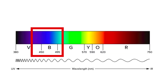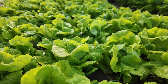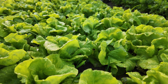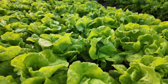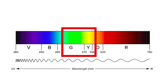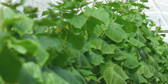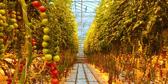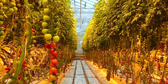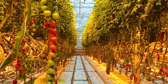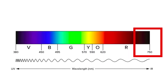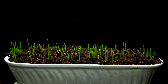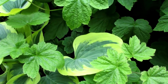Blue light, which is about 400 to 500 nanometers, is essential for vegetative growth, encouraging bushy and compact development. Green light, about 500 to 600 nanometers, is least absorbed but penetrates the canopy to support photosynthesis in deeper leaves. Red light, 600 to 700 nanometers, is crucial for flowering and fruiting, promoting stem elongation and blooming. Far red light, which is 700 to 800 nanometers, influences germination, flowering, and shade avoidance responses.